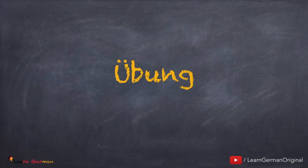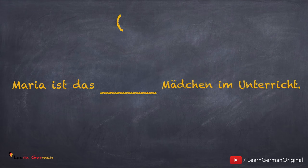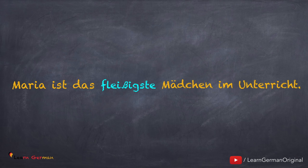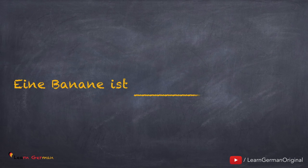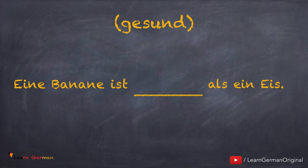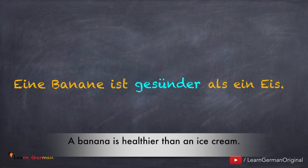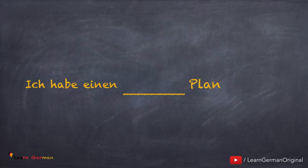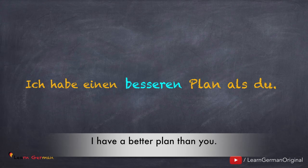Now let's do a small exercise. Übung — you have to fill in the blank with the correct form of the adjective. Do remember the adjective endings. The answer to the first one is: Maria ist das fleißigste Mädchen im Unterricht. You can't use Komparativ here because there is no comparison between two people. The correct answer to the next one is: Eine Banane ist gesünder als ein Eis. The moment you see als in the sentence, you should know that you have to use Komparativ. And the answer to the last one is: Ich habe einen besseren Plan als du.